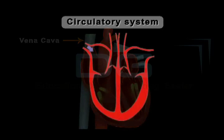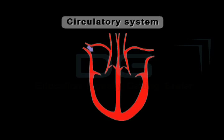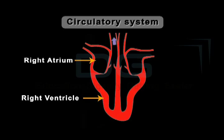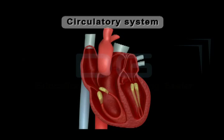Deoxygenated blood from different parts of the body enters the upper right chamber of the heart, called the right atrium, as it dilates. The right atrium then contracts, allowing blood to flow into the right ventricle, which contracts with the expansion of the right atrium to receive the blood through the one-way valve. The right ventricle then contracts, pushing the blood into the pulmonary artery, which carries deoxygenated blood to the lungs for oxygenation.